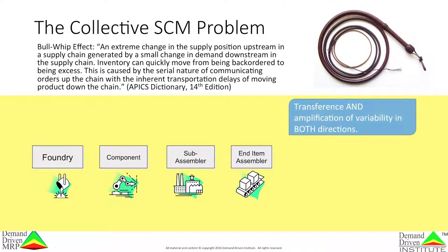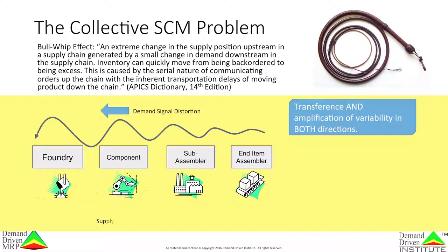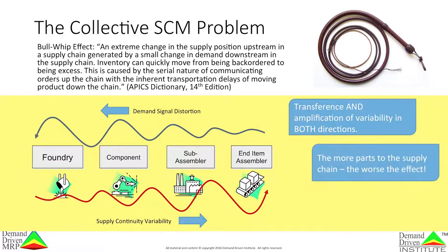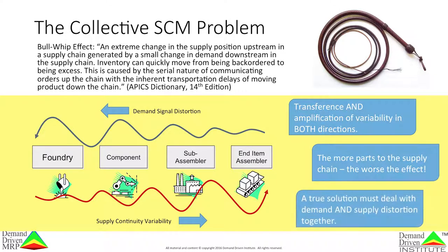The collective problem is one that wreaks havoc on modern supply chains. It is called the bullwhip effect. The bullwhip effect is the transference and amplification of variability up and down the chain. It is bidirectional. The more parts to the chain, the worse the effect. Any lasting solution to the bullwhip must address the bidirectional nature of the problem.